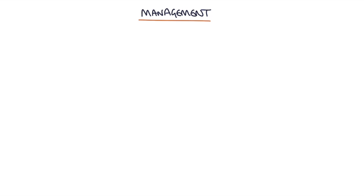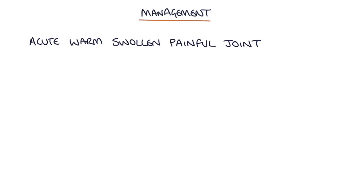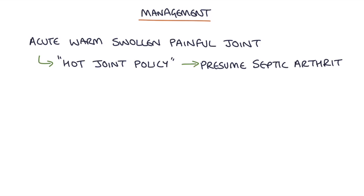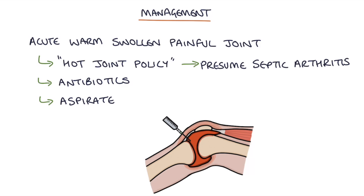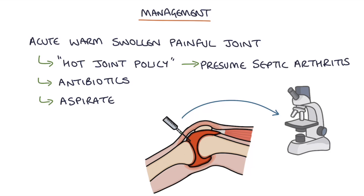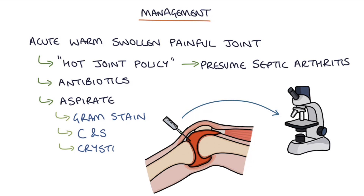For management, any patient presenting with an acute, warm, swollen and painful joint should be treated according to the local hot joint policy. This involves treating as presumed septic arthritis until that condition is excluded, which includes giving antibiotics. It's important to aspirate the joint — take a fluid sample and send it to the lab for gram staining, culture and sensitivities to look for bugs causing septic arthritis. The aspirated fluid can also be sent for crystal examination to look for gout and pseudo-gout.